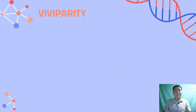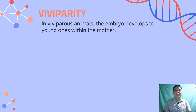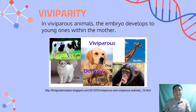The last type of internal fertilization is viviparity. In viviparous animals, the embryo develops into young ones within the mother. After internal fertilization, the embryo develops inside the mother itself. The mother's body provides all the nutrients and nourishment to the embryo and provides protection to the growing fetus. All mammals except platypus and echidnas are viviparous animals. Examples include cow, cat, donkey, dog, monkey, and giraffe, as well as all human beings.